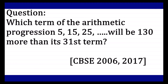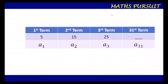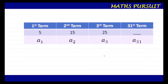In order to solve this question, we are first going to find out the 31st term. I have put this AP in a tabular form. The first term is 5, the second term is 15, the third term is 25, and the 31st term we don't know yet. We are going to find out the value of this 31st term, then add 130 to it, and solve for n.